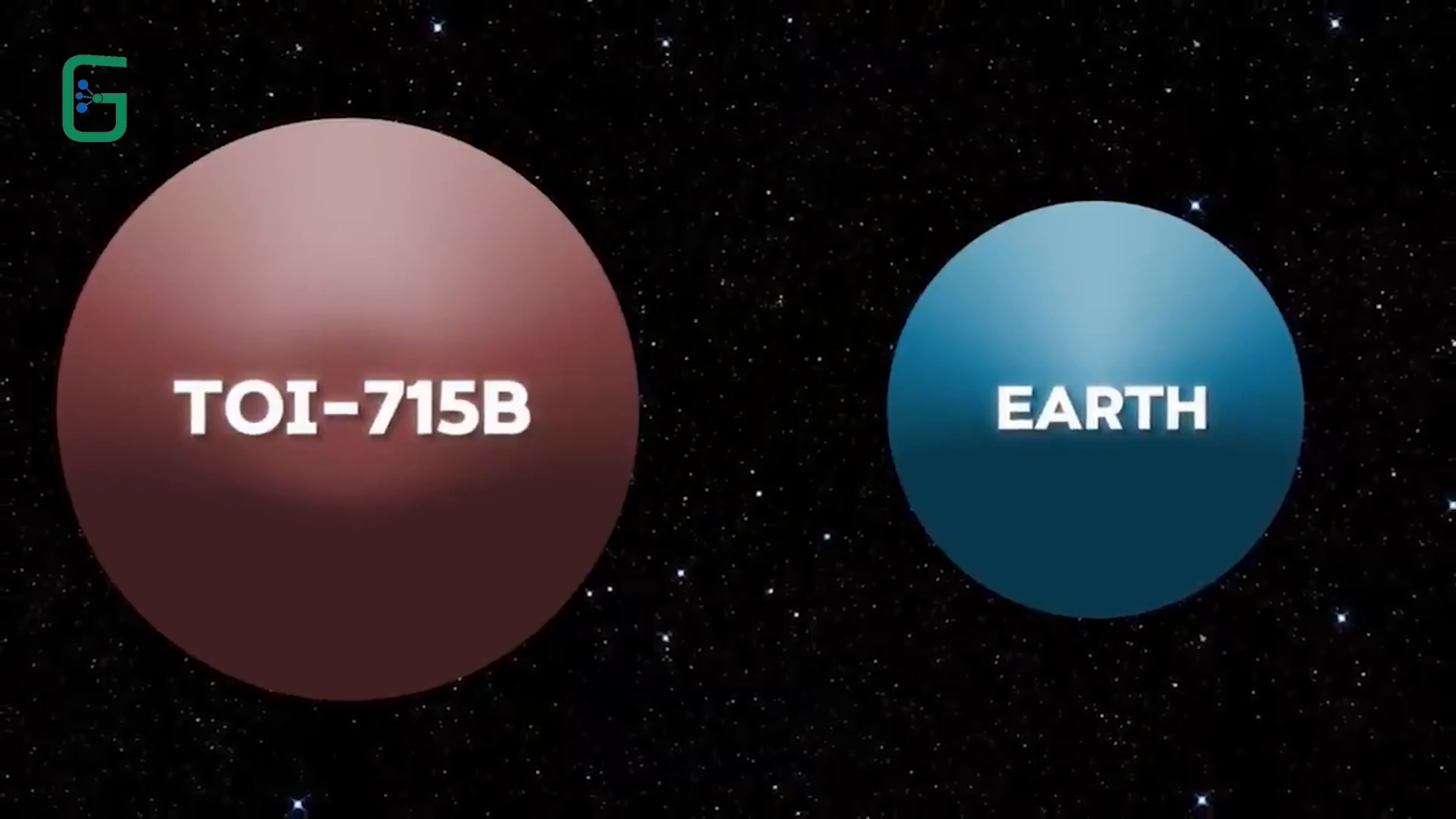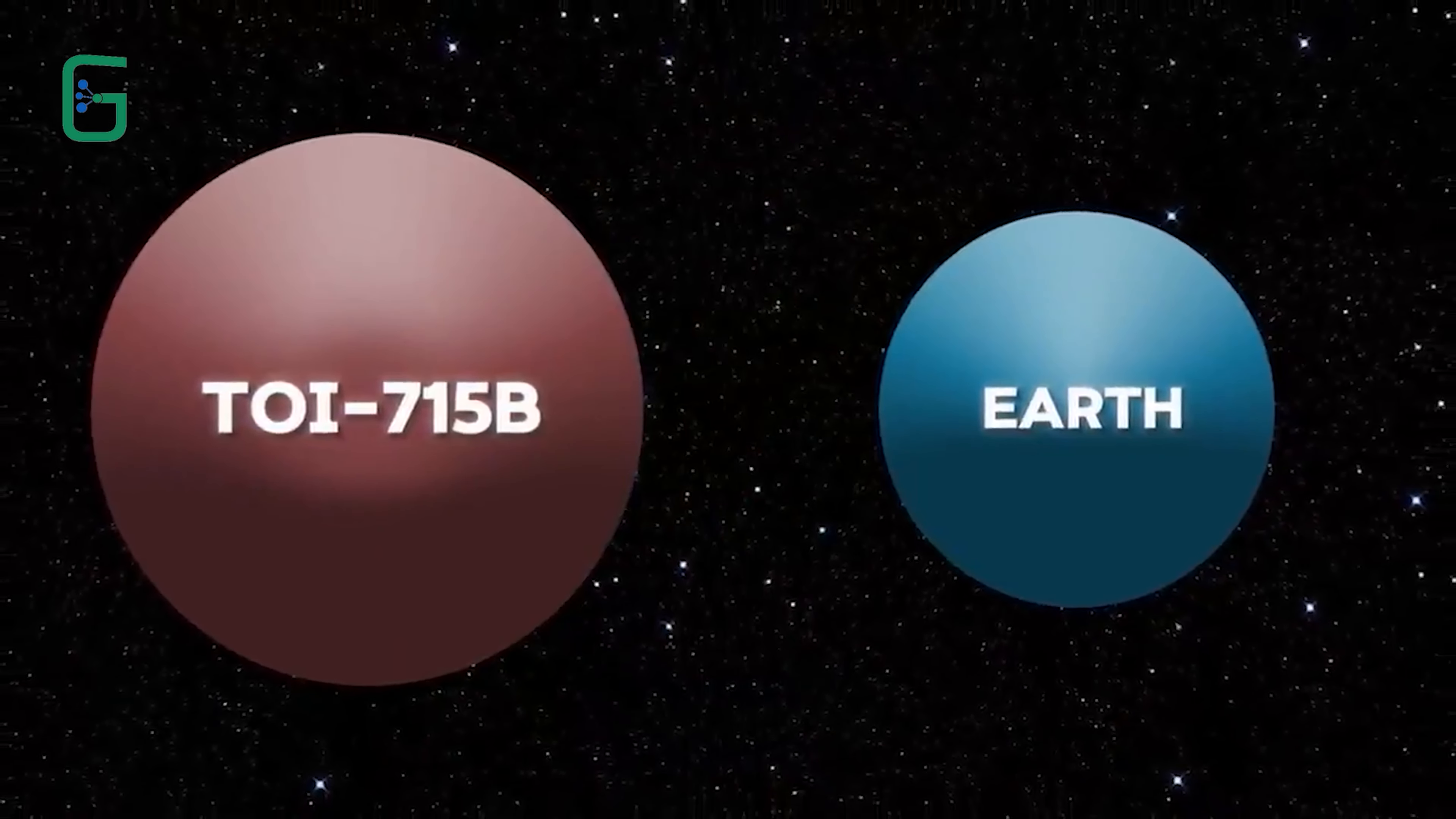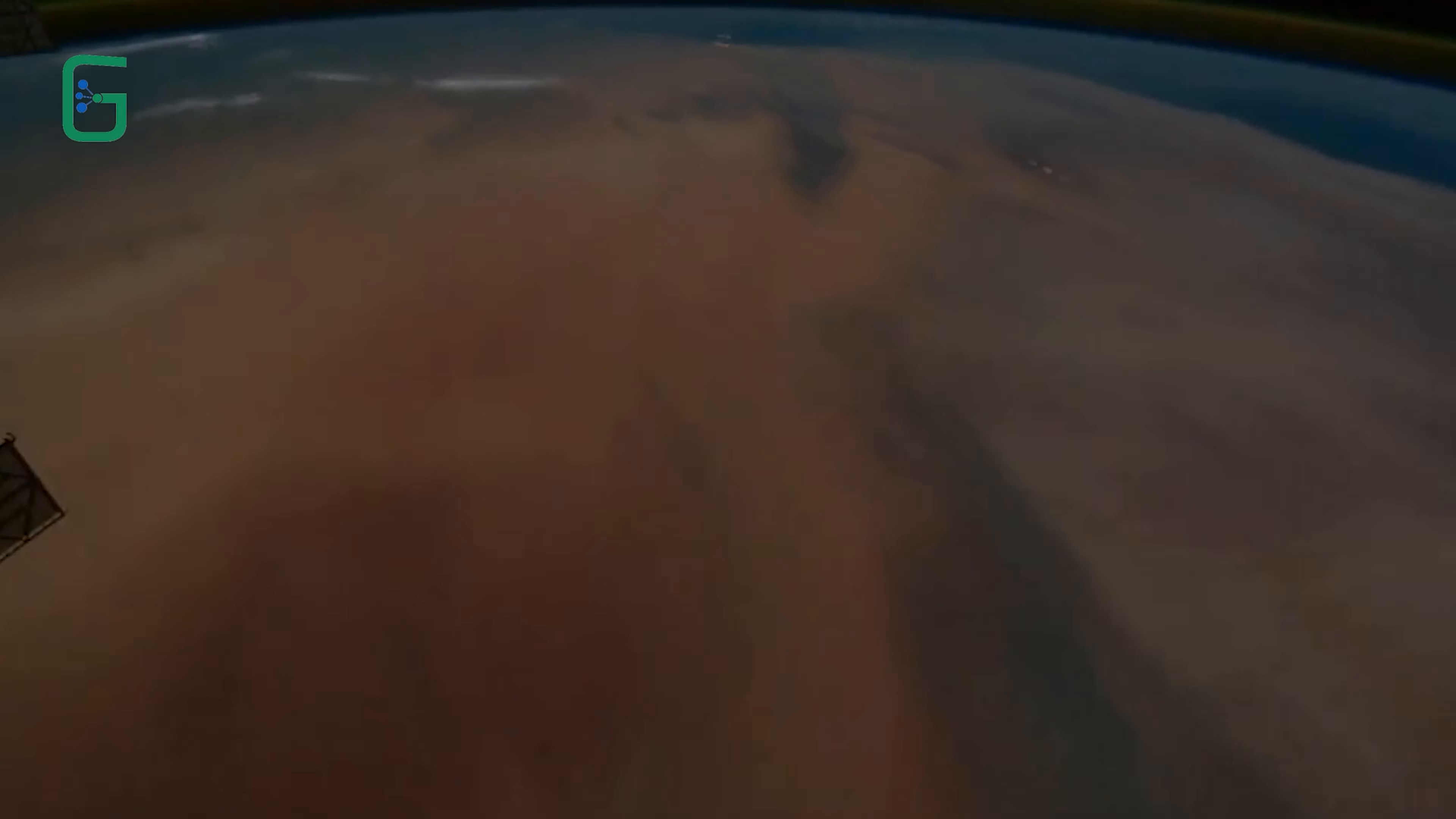This planet, roughly the size of Earth, holds a terrifying secret, an ocean not of water, but of molten lava. And when we say ocean, we're not talking about a mere puddle or stream, but a colossal expanse comparable in size to many of Earth's oceans, entirely composed of searing hot white lava.